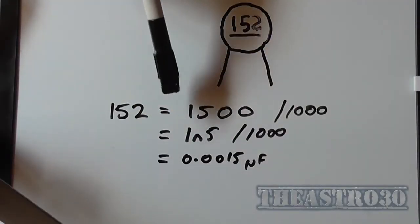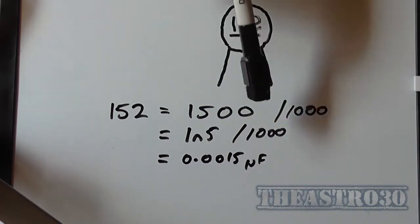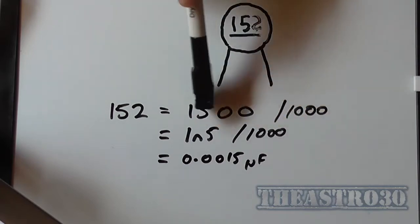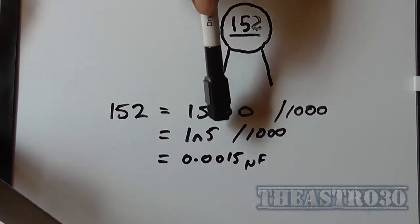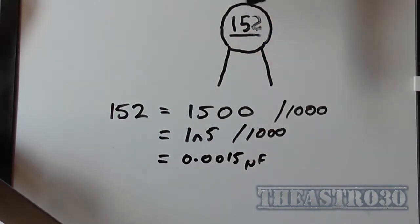When it's read, 152 means one five with two zeros, or 1500 picofarad. And then if you divide that by 1000, we're shifting the decimal point back three places, so it becomes 1.5 nanofarad.